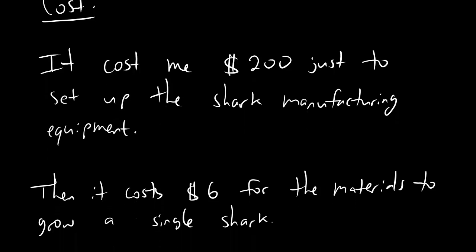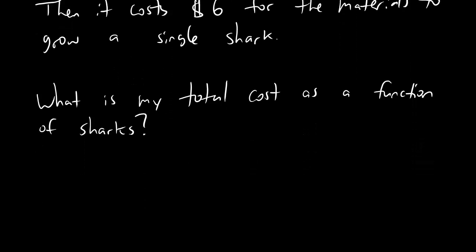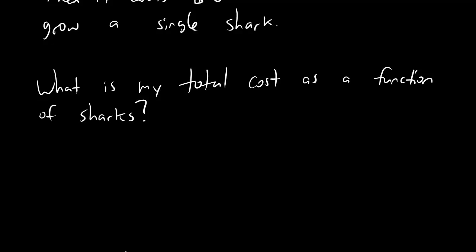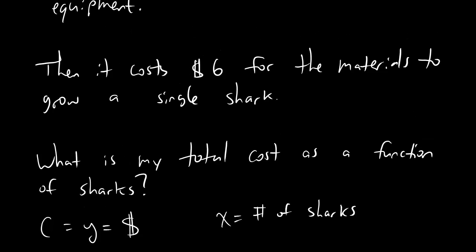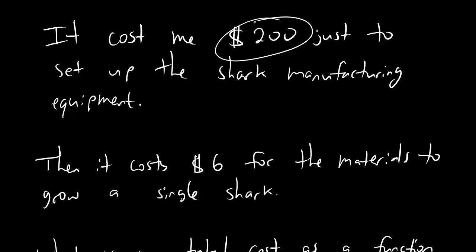It turns out that it cost me $200 just to set up the shark manufacturing equipment. And then on top of that, every time I want to make a new shark, I have to pay $6 for the materials per shark. And so the question I want to pose to you fine people is this. What is my total cost as a function of sharks?